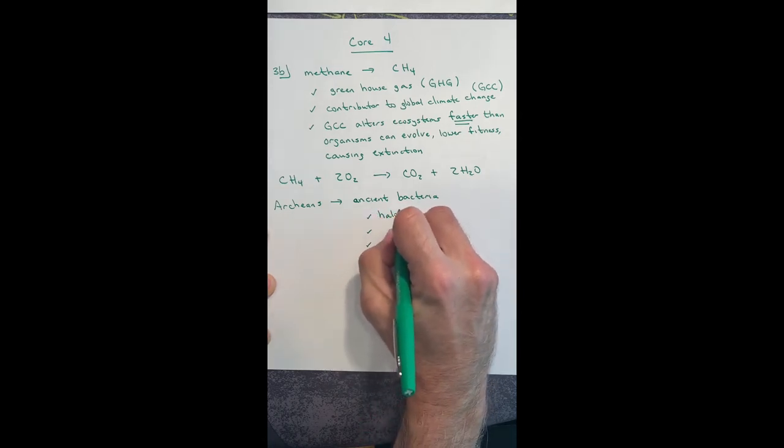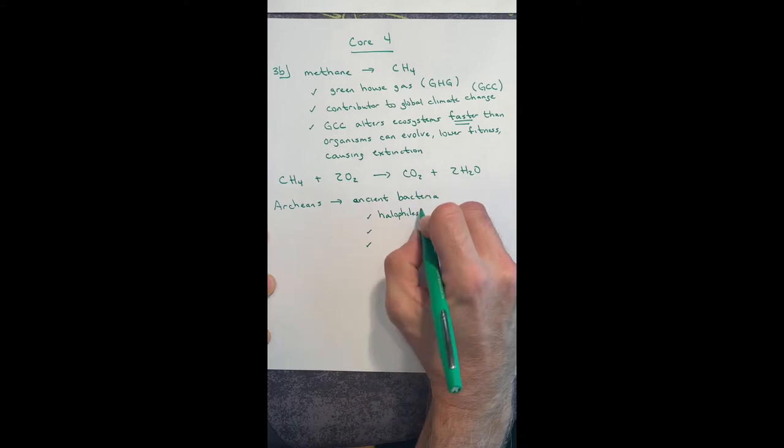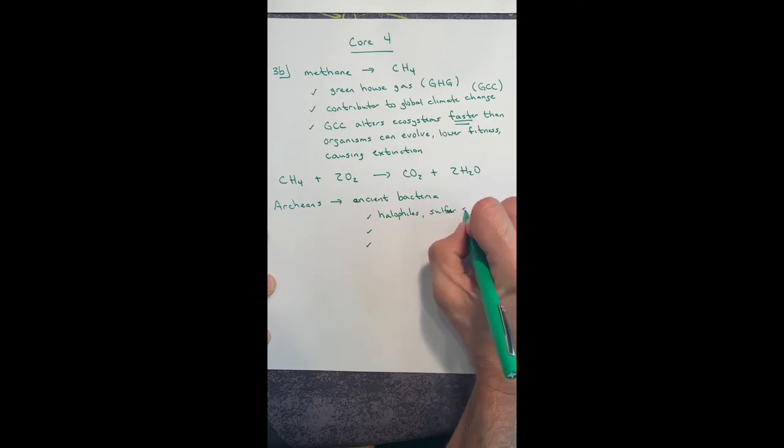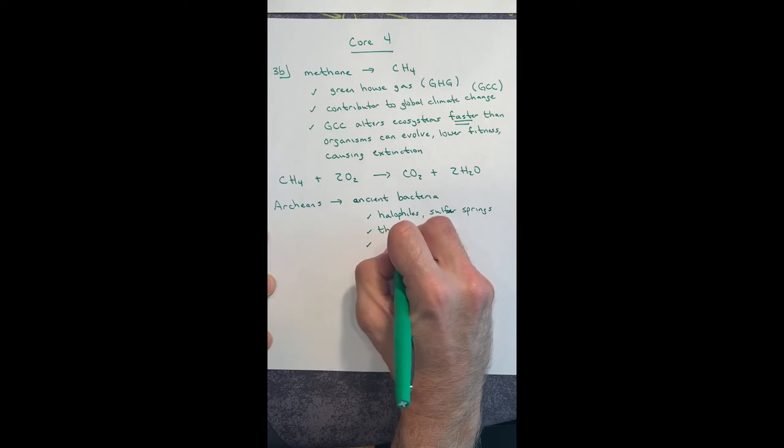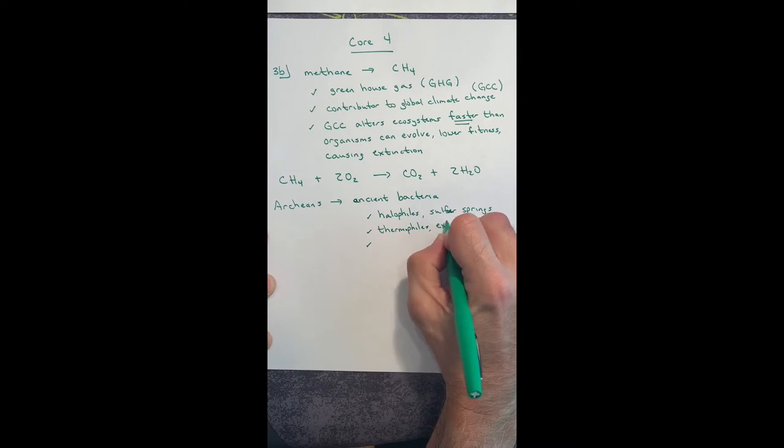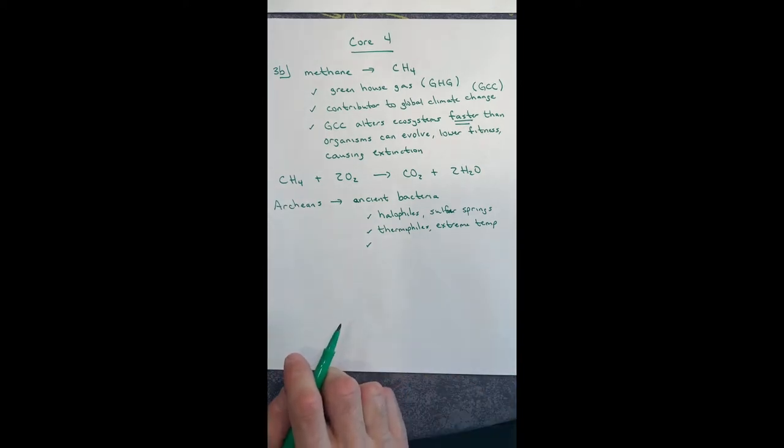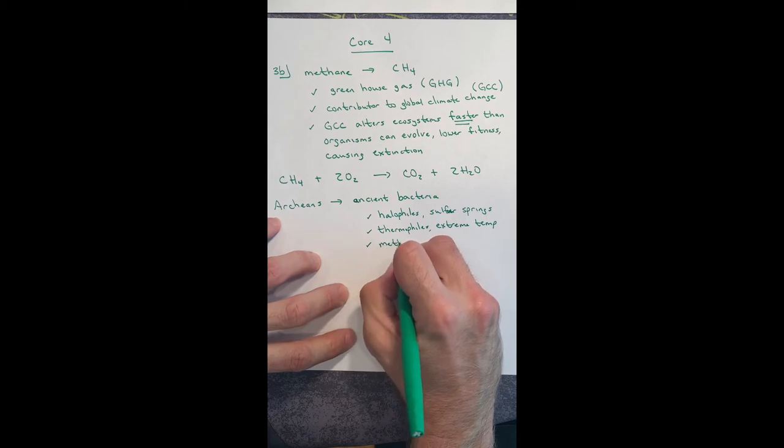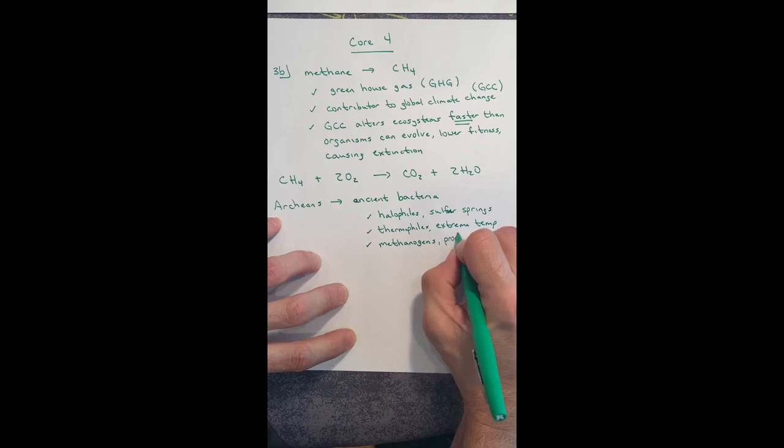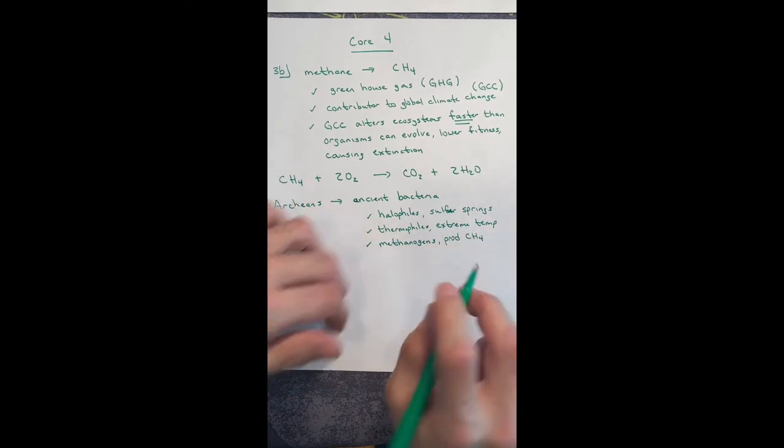Now, when you get into bacteria, there's three different kinds of ancient bacteria. There's halophiles. These live in sulfur springs. These live in extreme temperatures. You say, how extreme? Volcanoes. There are bacteria that live in volcanoes. And then methanogens. And methanogens are called methanogens because they produce methane, CH4.